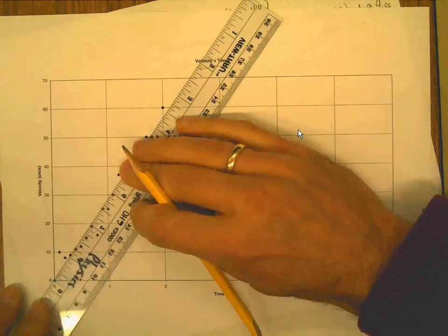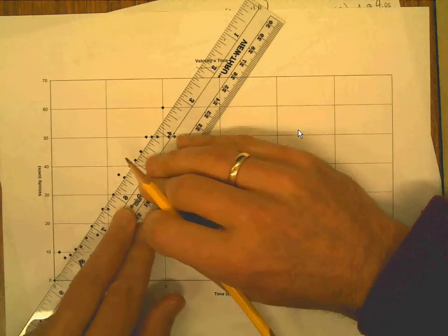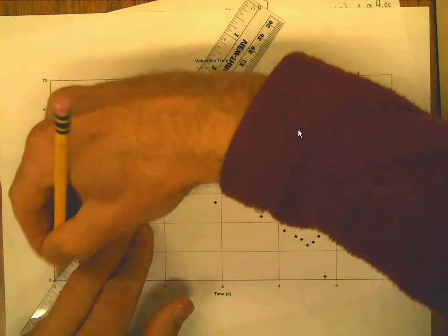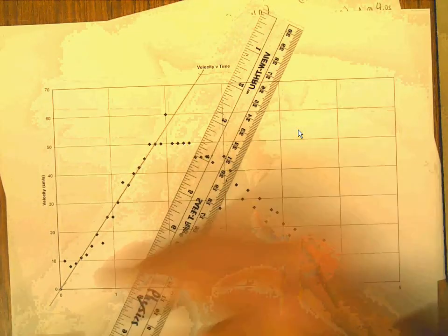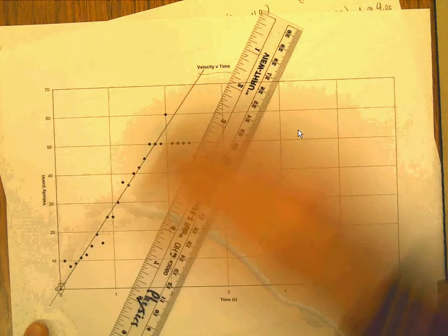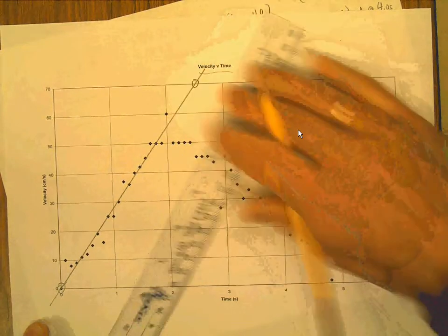I'm not necessarily connecting anything with zero or whatever but that looks like about the best. Whoops, I'm not very good at this. Okay, just go all the way up, make a nice long line because again we're going to use the end points of this line to find its slope.